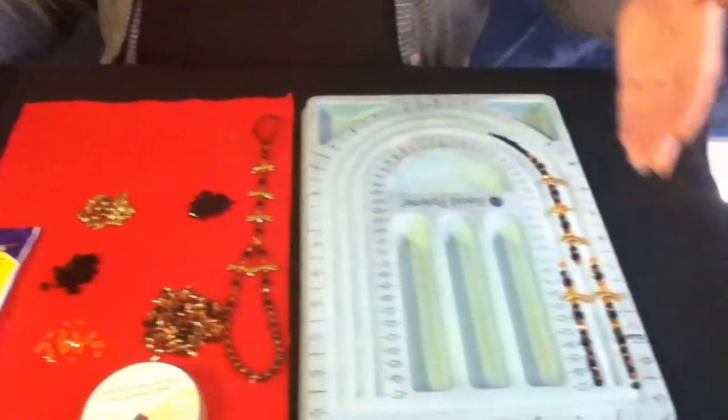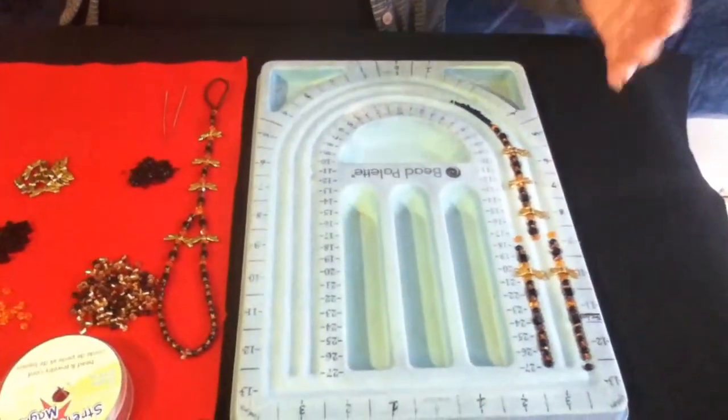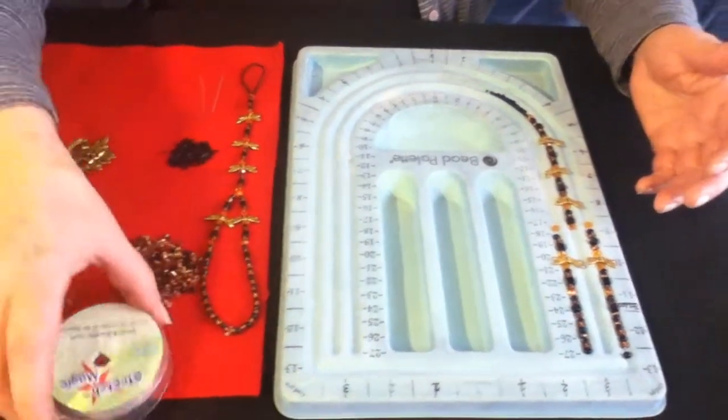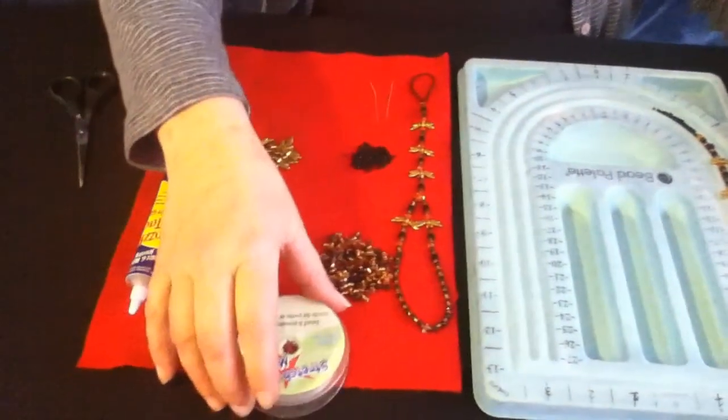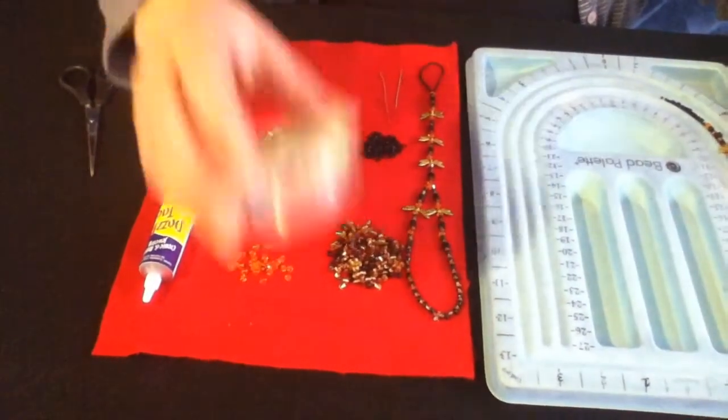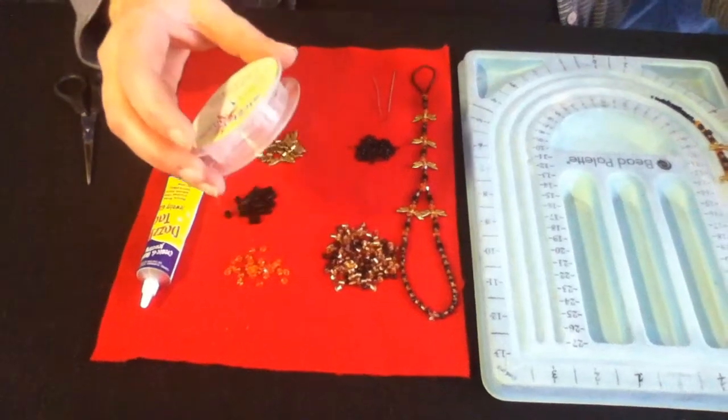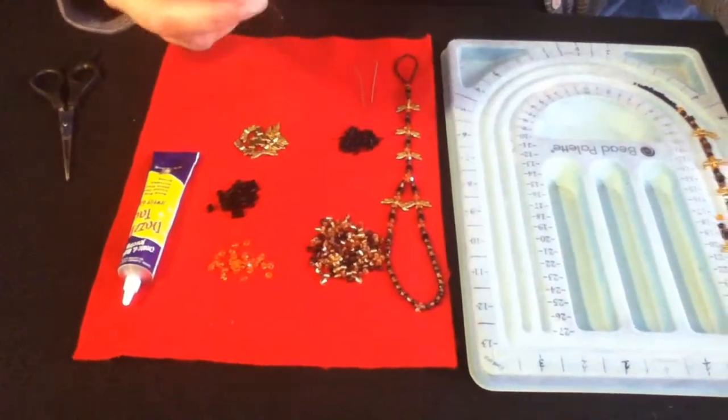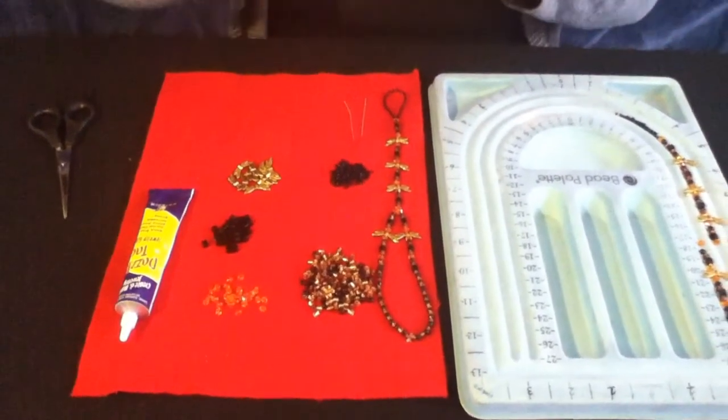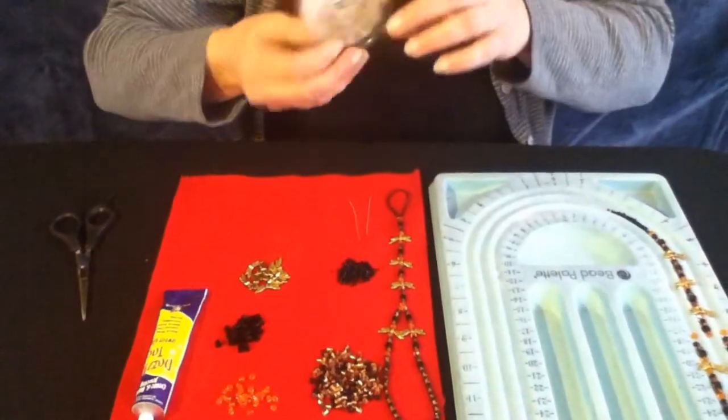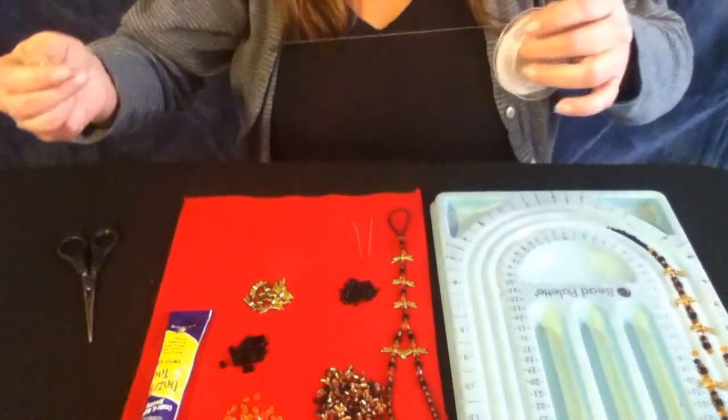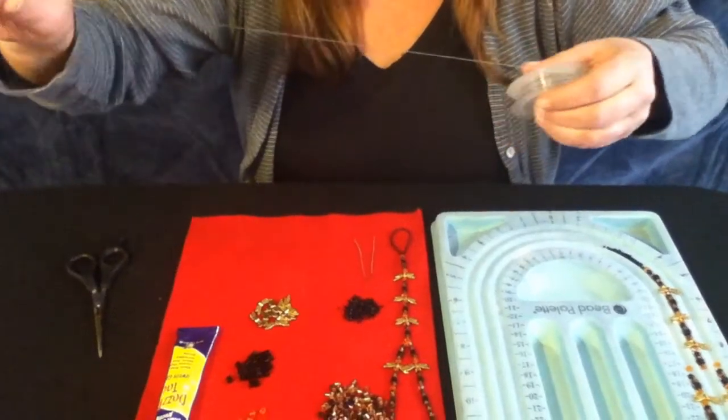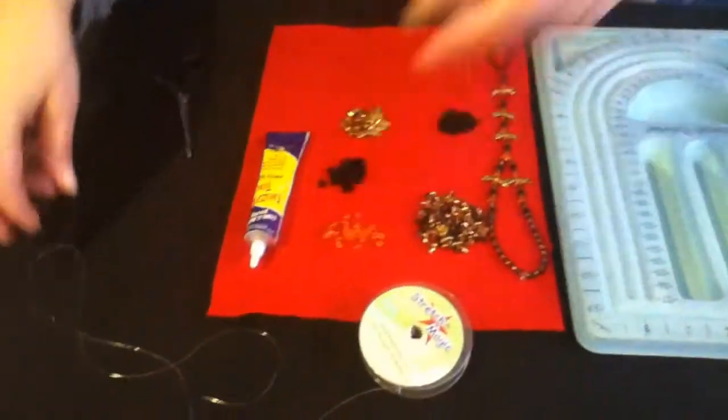So what I normally do first is I lay out my design, as you can see I have here. It's always nice to start out with your design laid out, and then what I would do is cut my elastic cord, which is roughly going to be about 25 inches for a size 8. So for a size 8, I need 24, 25 inches of elastic cord. So you would just cut your cord, and I will show you how to measure your foot to get the right size cord, because if you have a larger size, you're going to need a little bit longer cord.